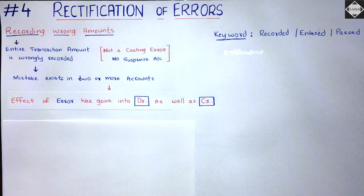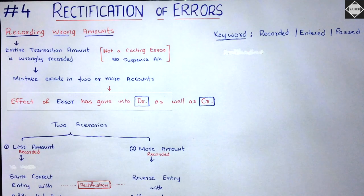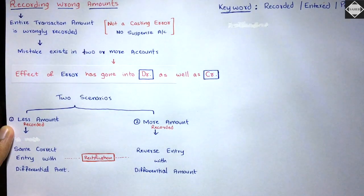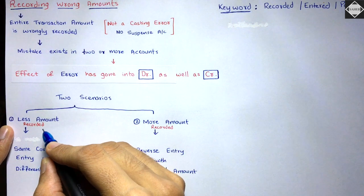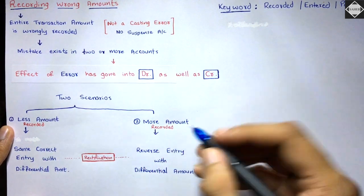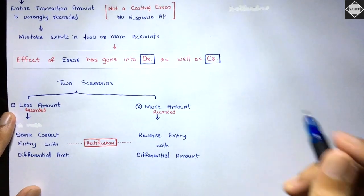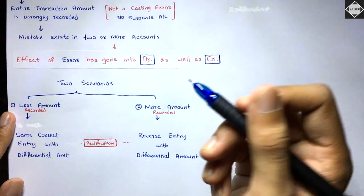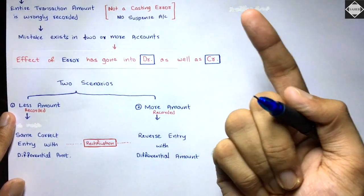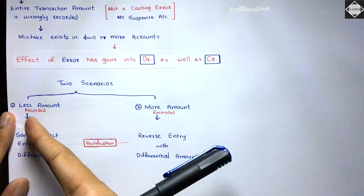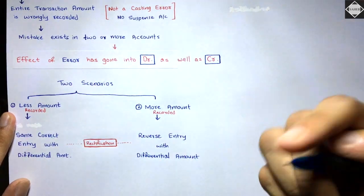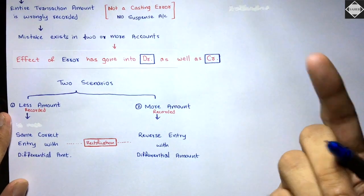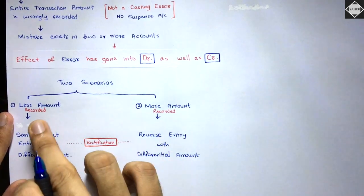There are two scenarios for rectification. The first scenario is that less amount is recorded — for example, rent paid five thousand has been recorded as one thousand. The second scenario is that more amount is recorded — for example, rent paid five thousand has been recorded as ten thousand. The effect has gone into debit as well as credit in both cases.